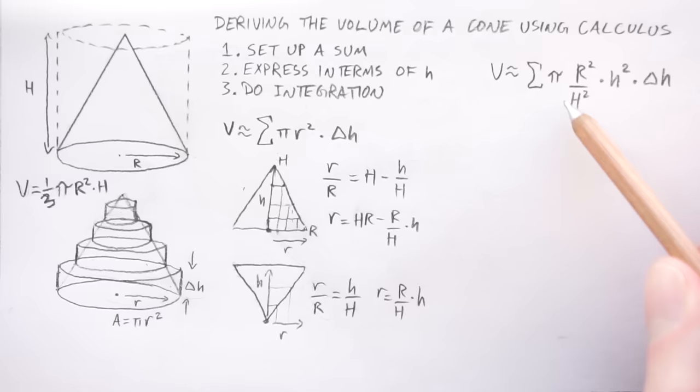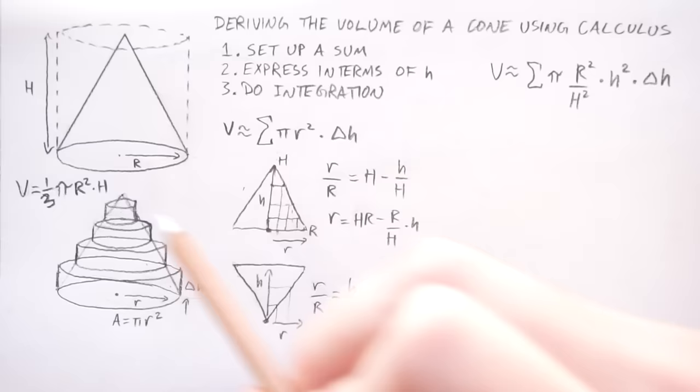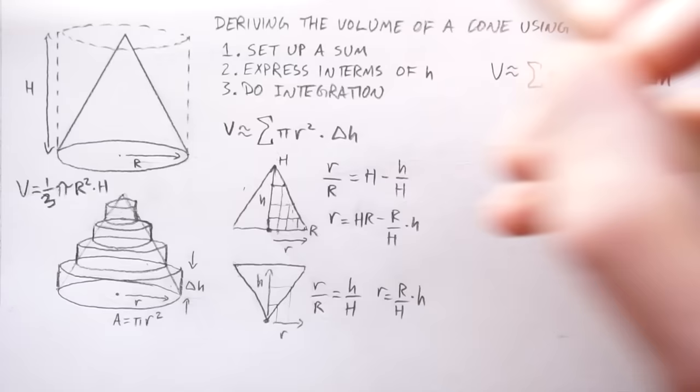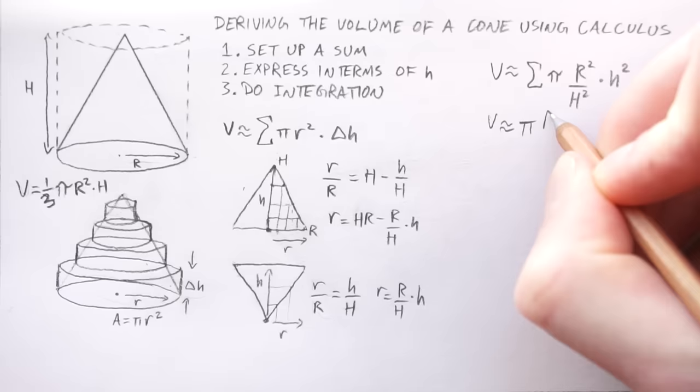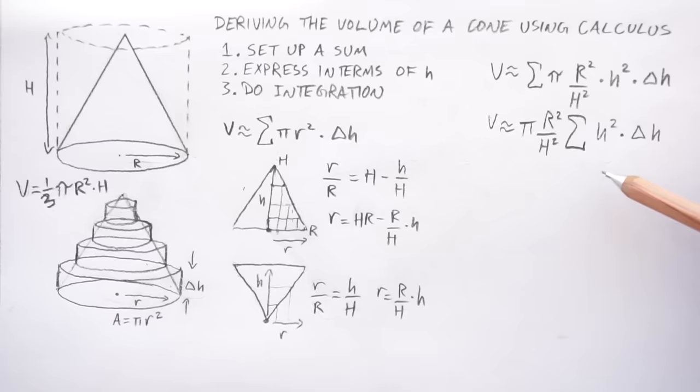Now we can simplify this a little bit more by taking out constants which are pi big R which is just the radius of the base and big H which is just the height of this cone. So V is approximately equal to pi big R squared over big H squared sum of h squared times delta h.